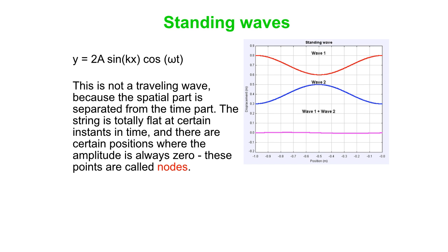Note that this is not a traveling wave, because the spatial part is separated from the time part. The string is totally flat at certain instants in time, and there are certain positions where the amplitude is always zero because of the sin(kx) piece. We call those the nodes, where the amplitude is always zero.